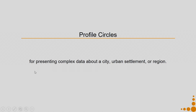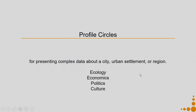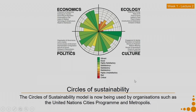Profile Circles are meant for presenting complex data about a city, urban settlement or region. These complex data are about ecology, economics, politics and culture of that particular city, urban settlement or region. Let us do a quick recap from our Week 1 Lecture 2. This is what we presented: Circles of Sustainability. This model is now being used by organizations such as the United Nations Cities Programs and Metropolis.